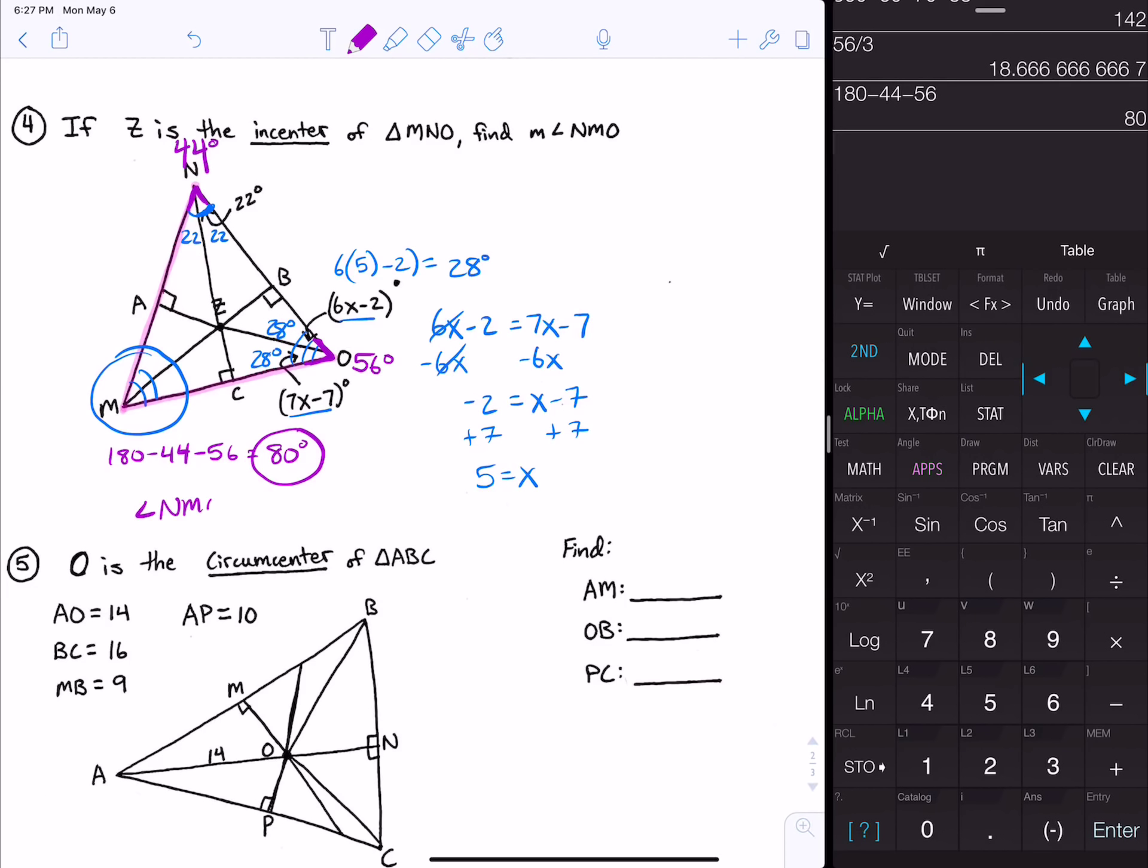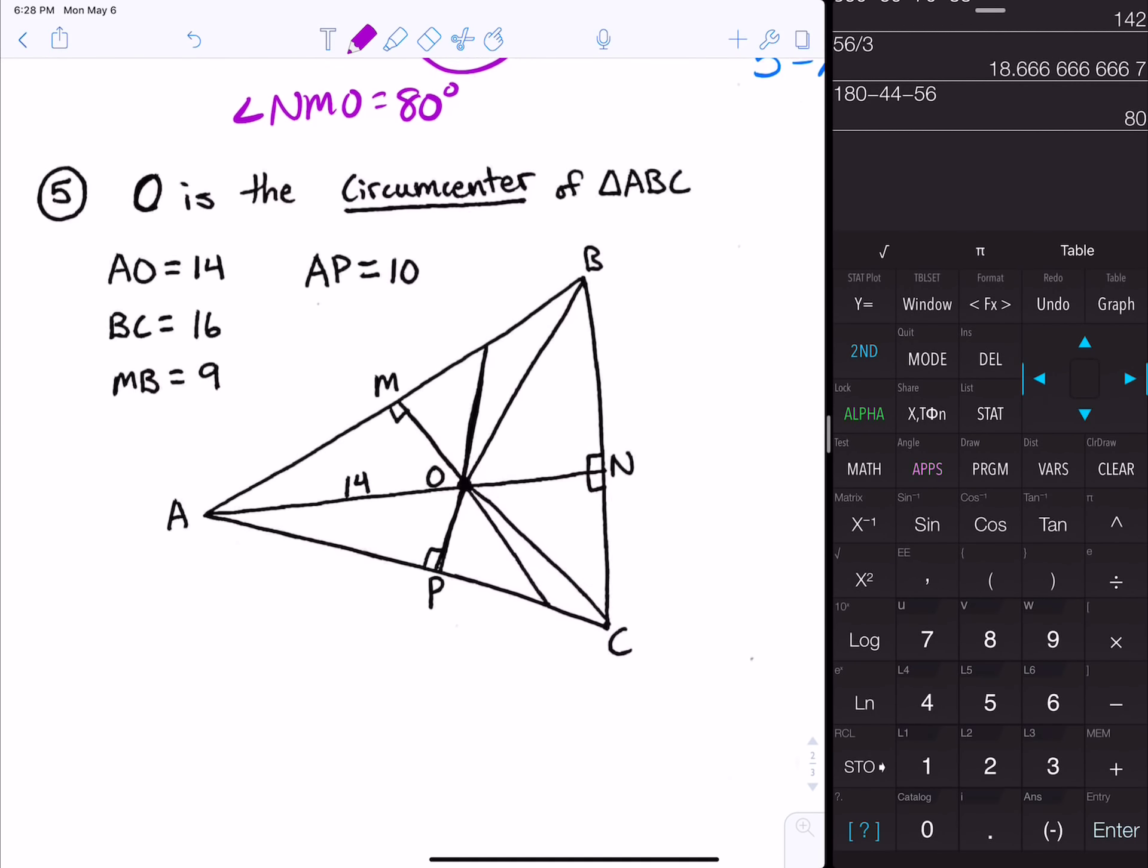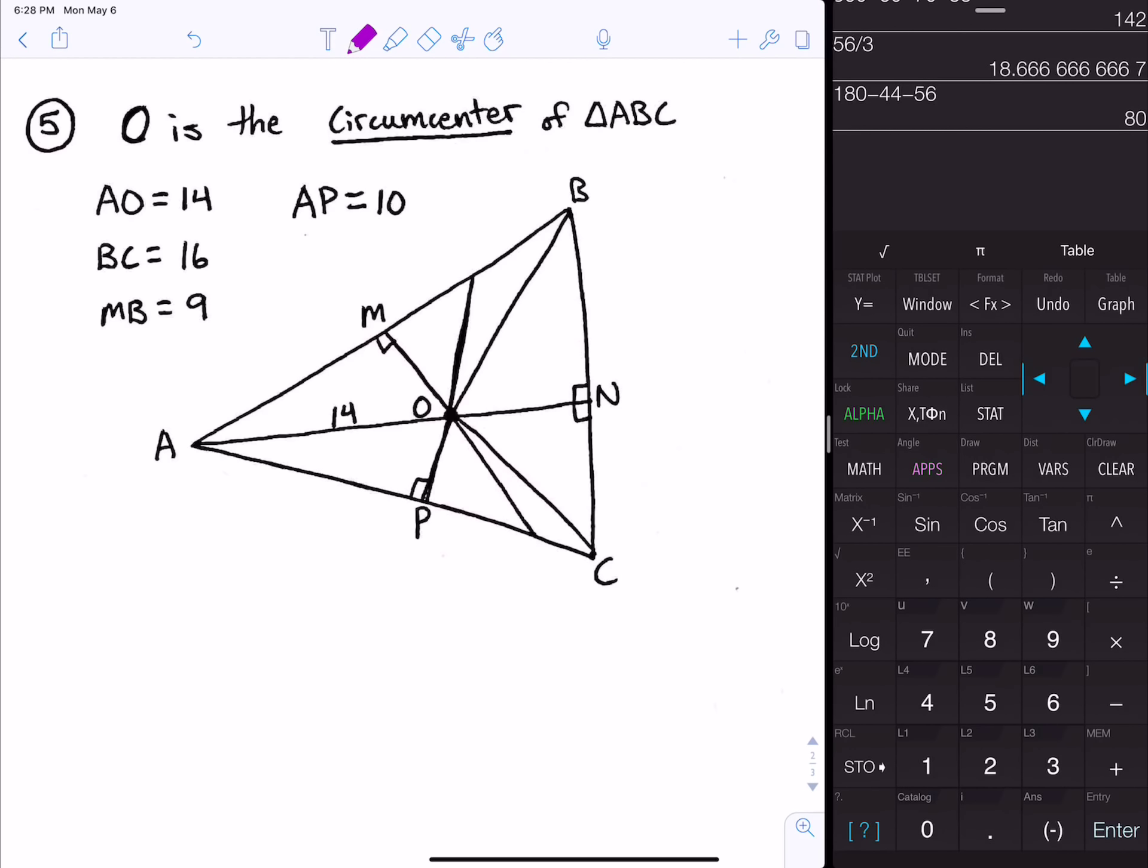Number five says O is the circumcenter of triangle ABC. We need to find AM, OB, and PC. I like to label the triangle if it's not already labeled. There are perpendicular bisectors that form the circumcenter, so that means these are equal, and those are equal, and these are equal. Then P, M, and N are all perpendicular to those sides of the triangle.